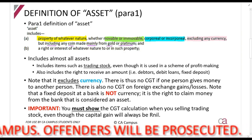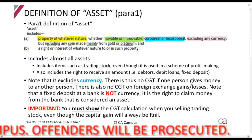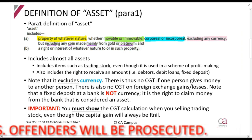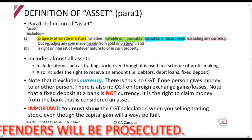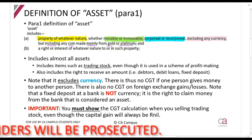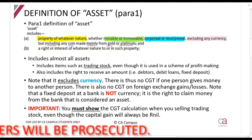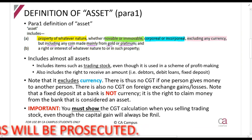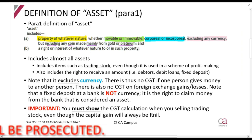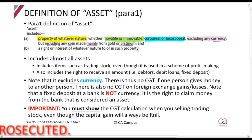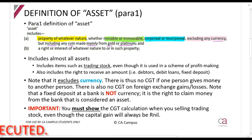Movable or immovable: a computer is movable, land is immovable. Corporeal or incorporeal: a desk that you can touch is corporeal; something intangible like a patent is incorporeal. But it doesn't include currency. Currency here refers to money - coins and notes basically.